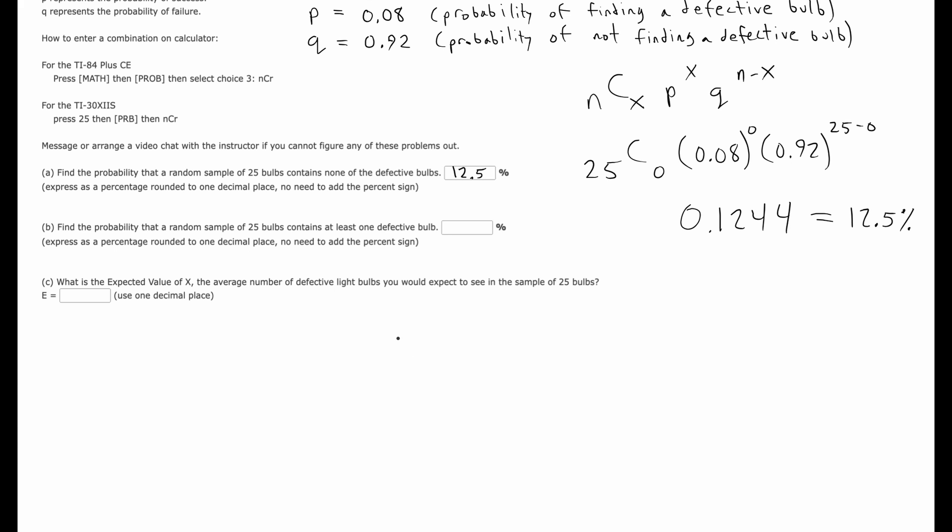There's like an easy way and then a really hard way. So you could say that the probability of getting no defective bulbs plus the probability of getting at least one defective bulb, they are complements of each other and they have to add up to one.